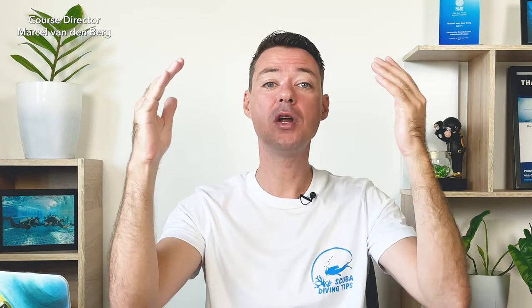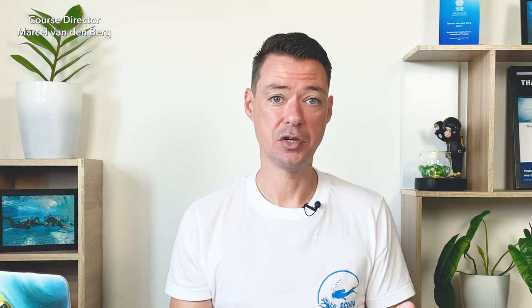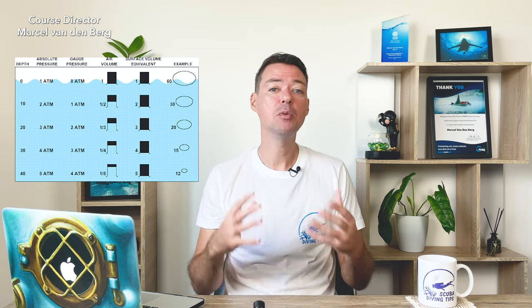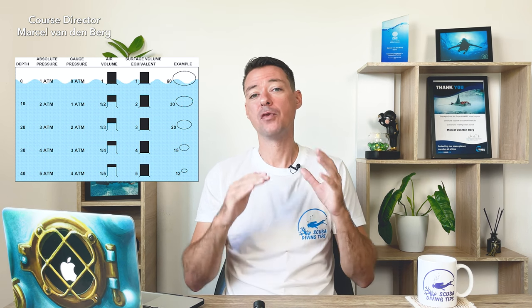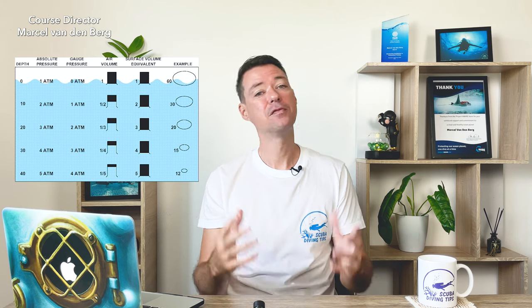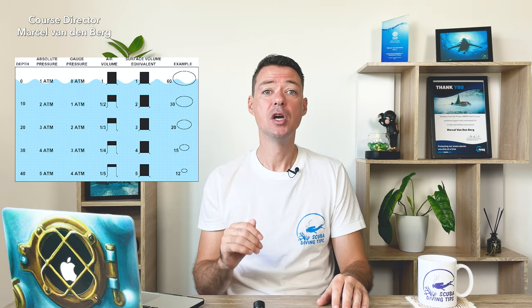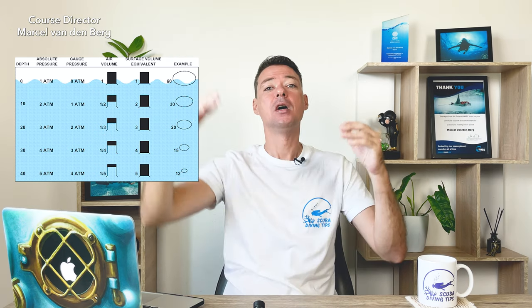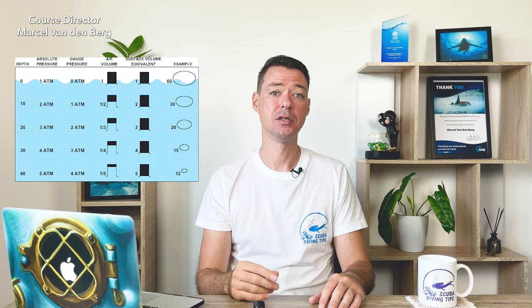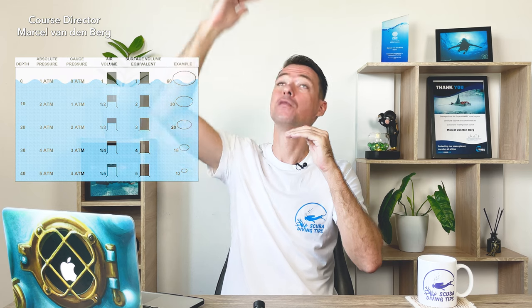When we go scuba diving, we go under the water, which means we have an increase of pressure around us. This is because we're now surrounded by water, which also weighs something and puts pressure on top of us. We still have the surface air pressure on us as well. For every 10 meters you go under the water, the pressure increases by one bar. At 10 meters, you have one bar from the water plus one bar from the surface — that's two bar total.